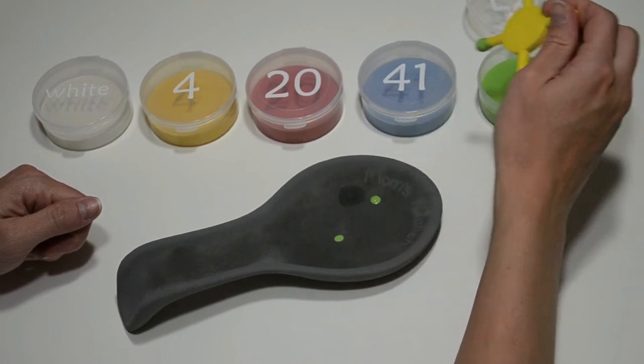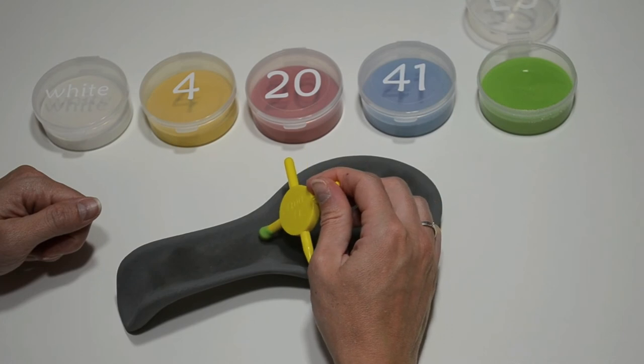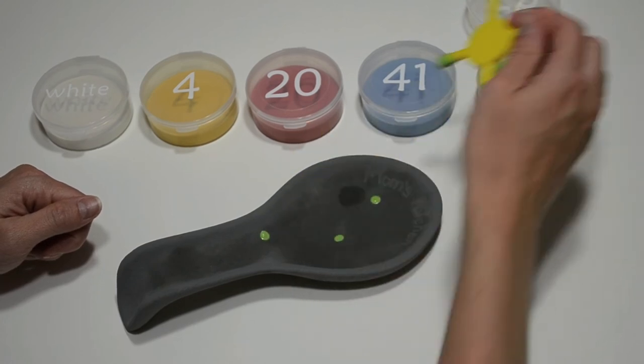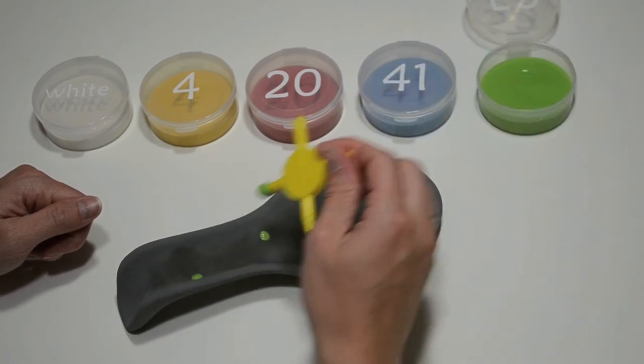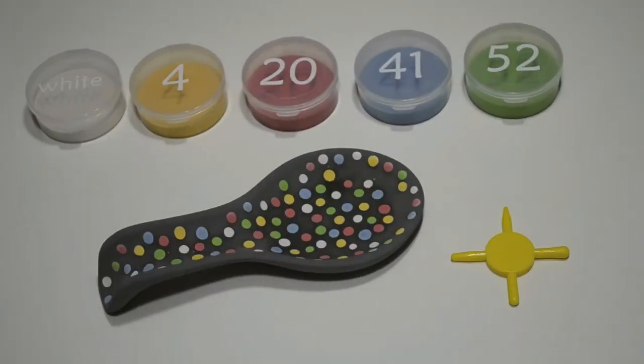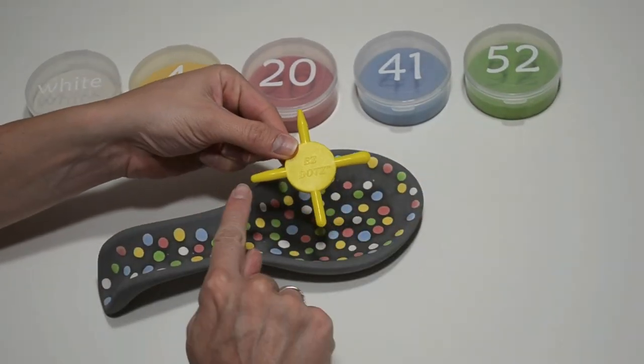For even spacing, spread out dots all over the spoon rest. Start with just a few dots. You can always add more. Once the dots are dry, you are ready to add the next layer.